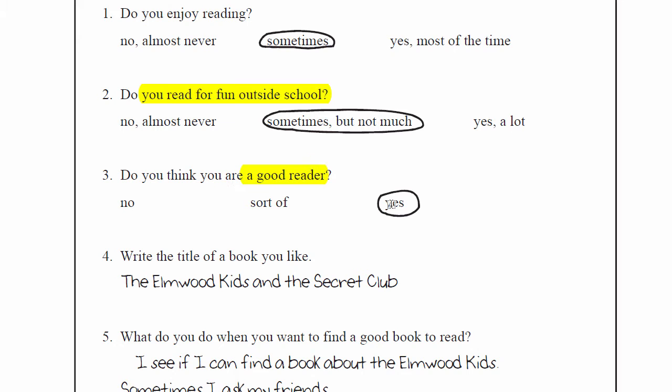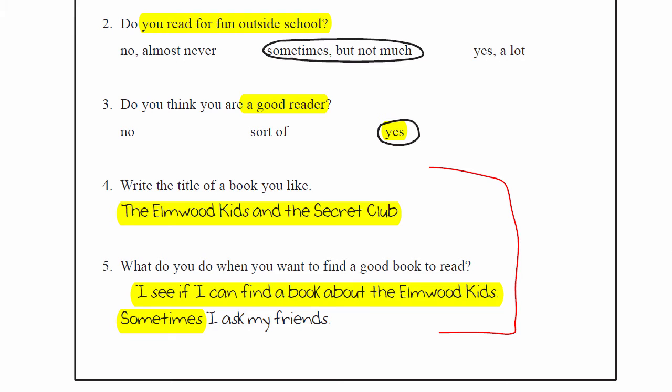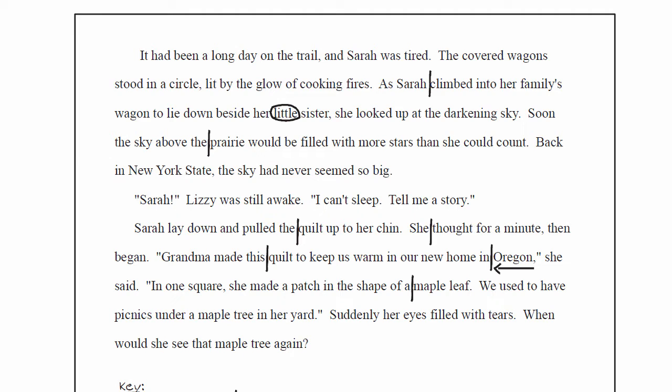Sometimes, do you read for fun outside of school? Sometimes, but not much. Do you think you're a good reader? Of course I do. Write the title of a book you like: The Elmwood Kids and the Secret Club. What do you do when you want to find a good book to read? I see if I can find a book about the Elmwood Kids. Sometimes I ask my friends. This child is stuck in a particular genre — very predictable, easy narratives with predictable characters going on adventures. This piece of data is a little important.